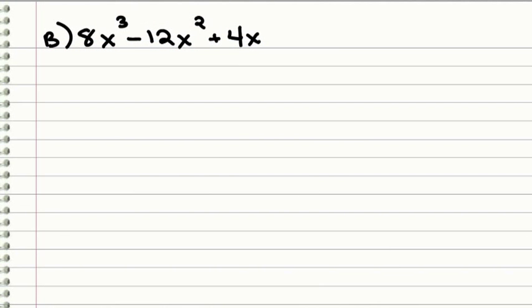Let's take a look at the second one. Here, the 8, the 12, and the 4, they're all divisible by 4. And they all have an X. So we can take out a 4 X. And again, one of the methods, as opposed to just visualizing the distributive property backwards, is you can physically divide out each term there by your GCF. And that will help you determine what's left.